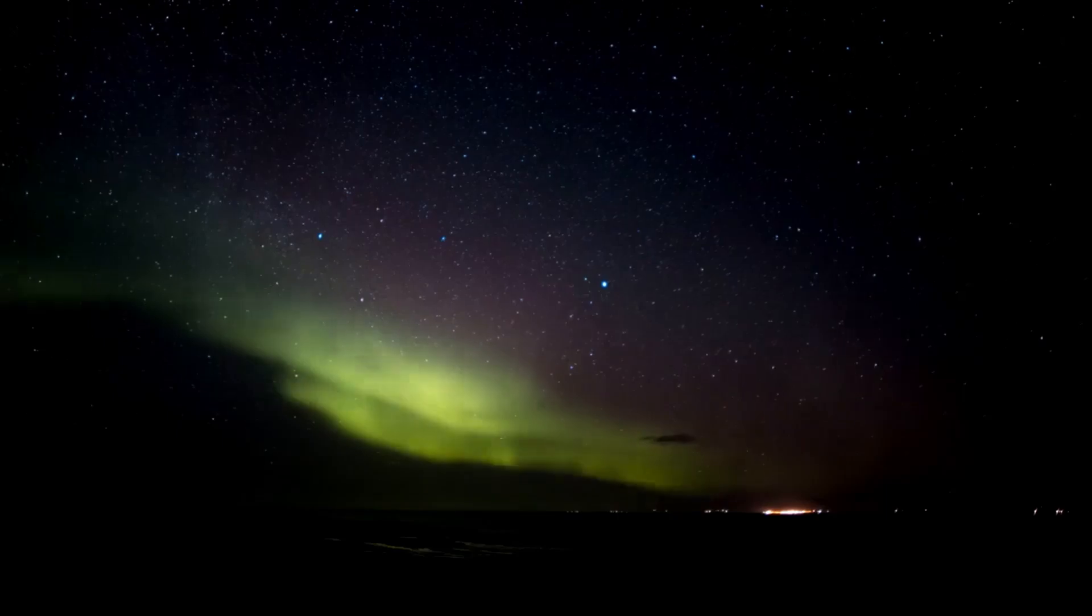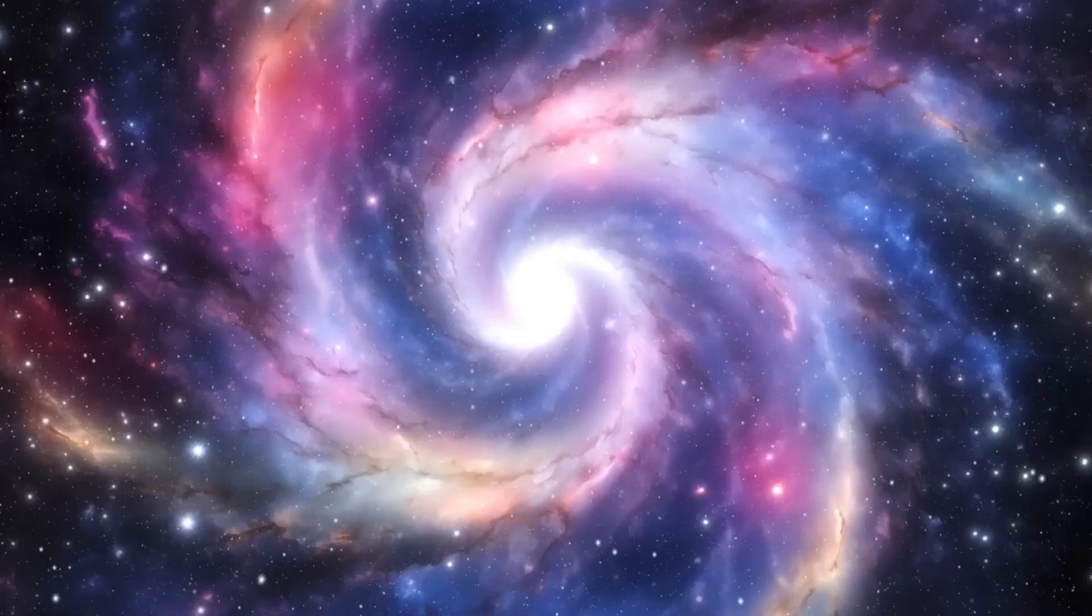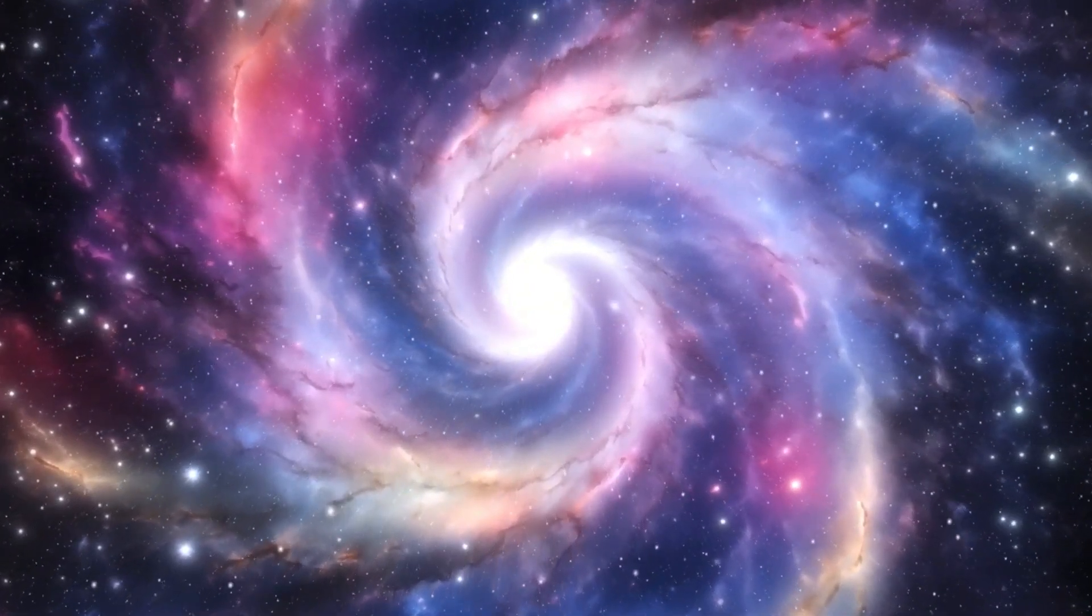Jupiter, once thought to be a calm giant, turned out to be a world of extremes, featuring hundreds of violent storms, a glowing aurora at its north pole, and intricate rings.